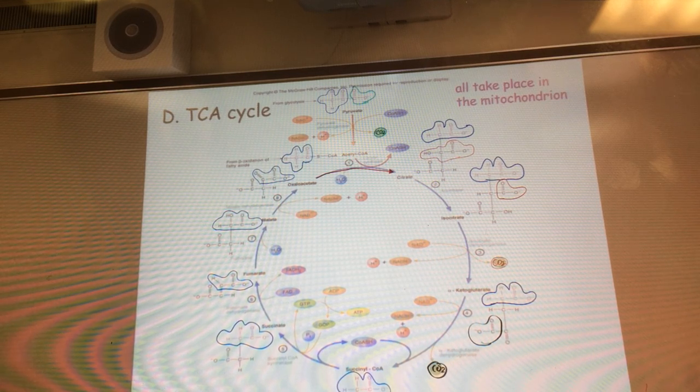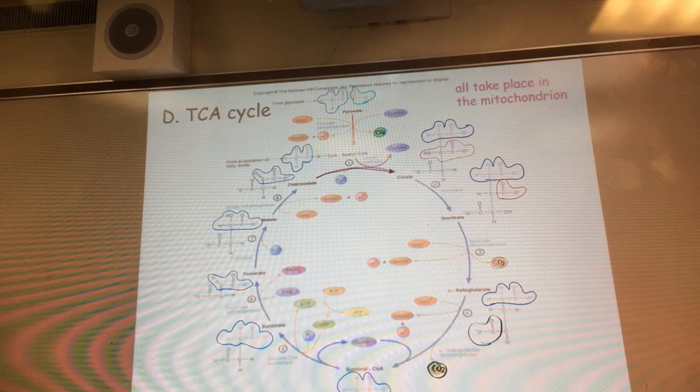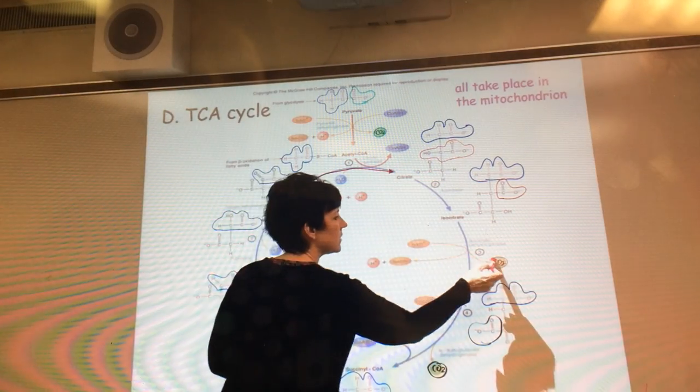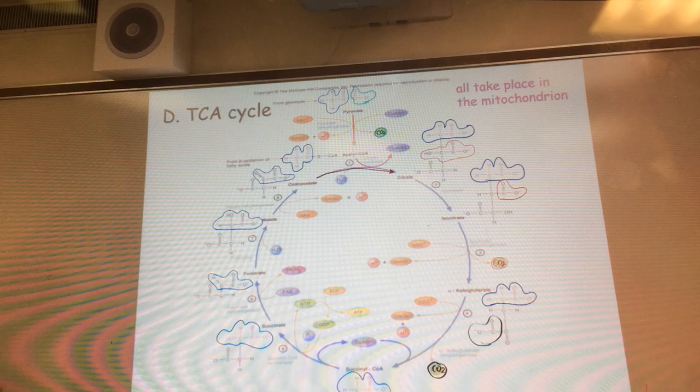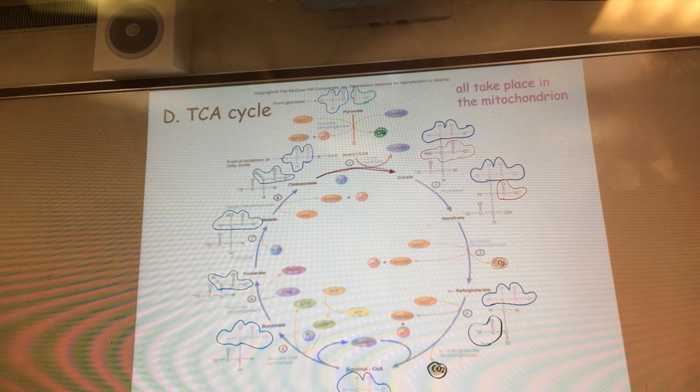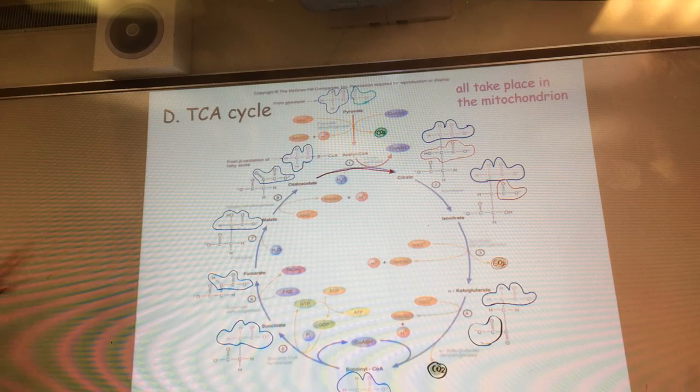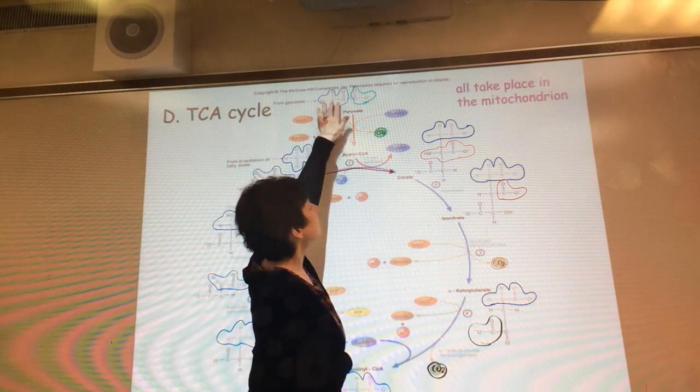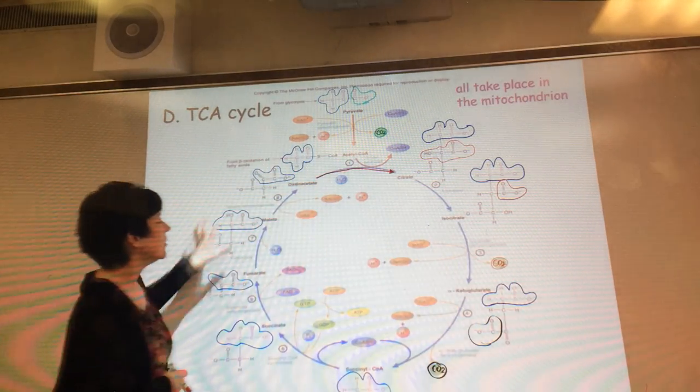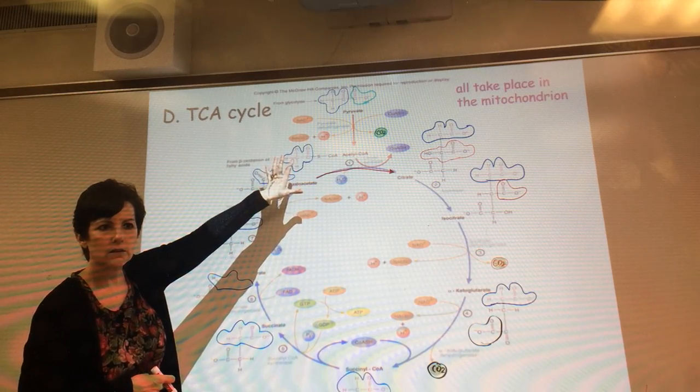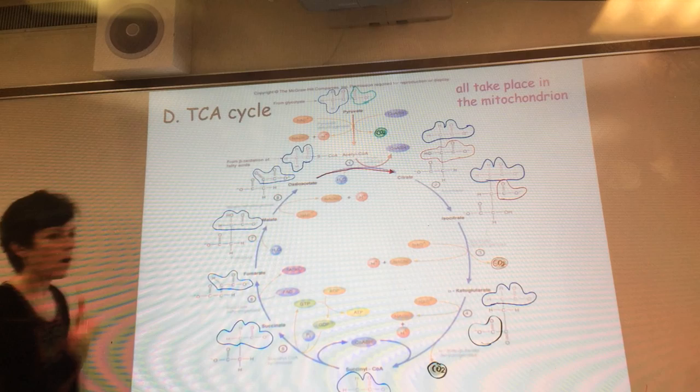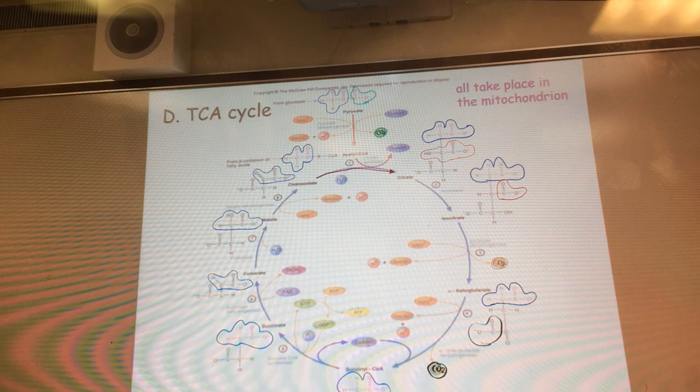So the resulting decarboxylation reaction, if you were trying to put a C13 label on it and watch it go around, the first time around you're not going to see anything. One cycle through, your C13 labeled molecule will stay on your oxaloacetate. But not until the second time around will you get to see one of the C13s come off.